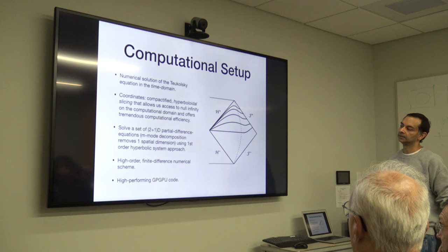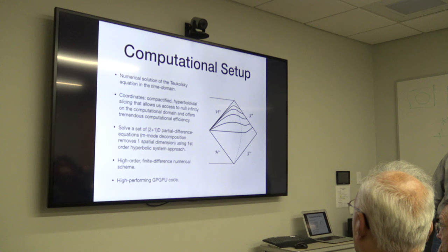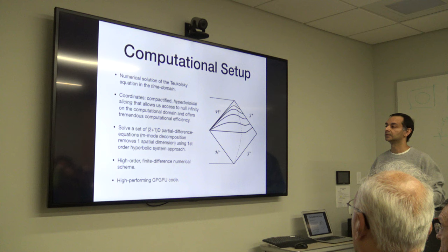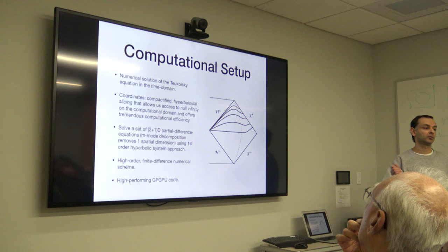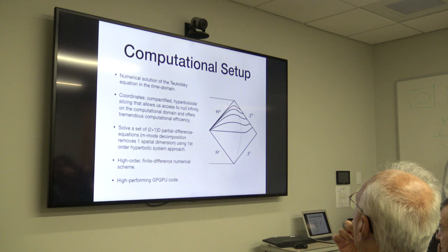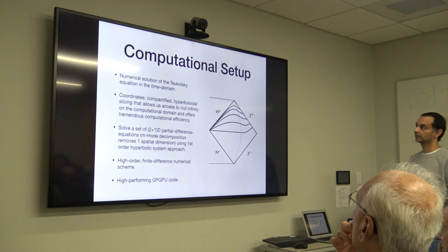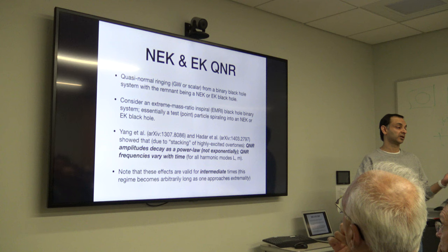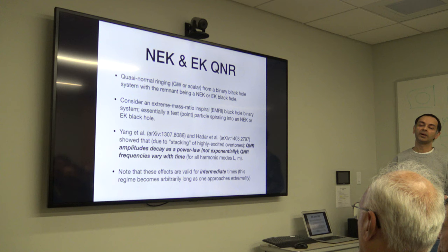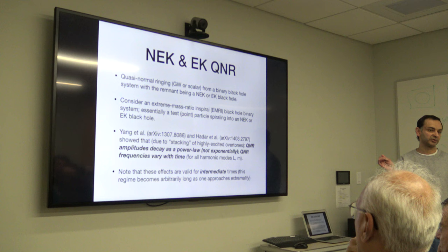We consider an extreme mass ratio inspiral: you've got a black hole - in our case an extremal or near-extremal Kerr black hole - and you take a small test particle and let it spiral into this black hole. This type of work has been looked at in the past, though not a lot. There are two papers I'll use multiple times: one by Yang et al. from Chen's group at Caltech, and one from Andy's group here. They found two unusual aspects given the near-extremal Kerr background: the quasi-normal mode overtones get highly excited and stack on top of each other in a peculiar way.